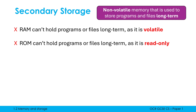A big misconception is that people hear the word 'secondary' and think secondary storage is a backup to primary storage — that it's not essential. But it is essential if we want to store programs or files long term. We just can't use RAM or ROM. All of the programs, files, documents, and pictures on your computer are being stored in secondary storage. They're just copied into RAM when you open them.